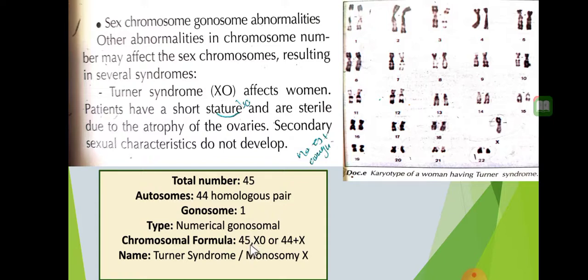The chromosomal formula is written as 45, X0 — meaning there is one X and no second sex chromosome. Alternatively, it can be written as 44 + X, where 44 represents the autosomes and X is the single gonosome, totaling 45. The two gonosomes that should be present are reduced to one.